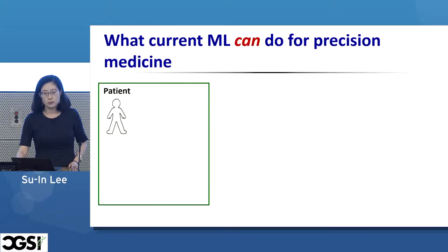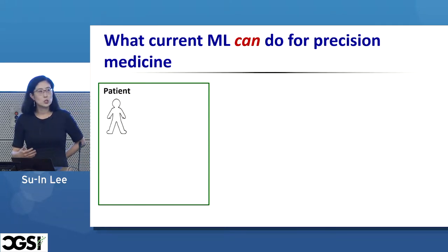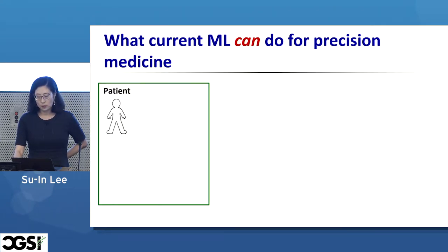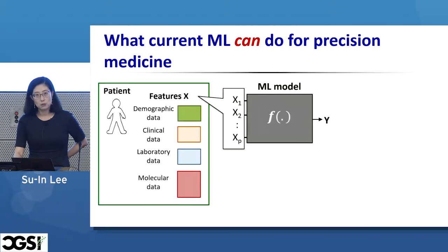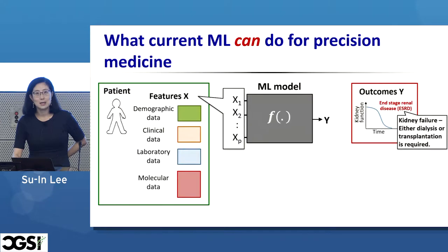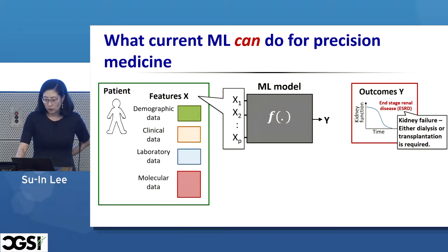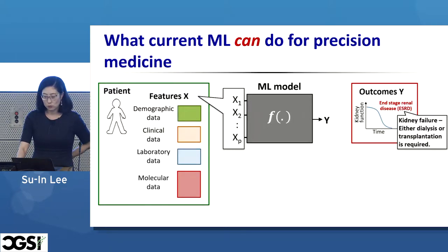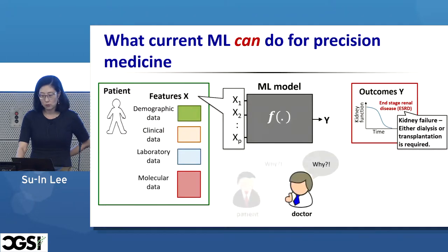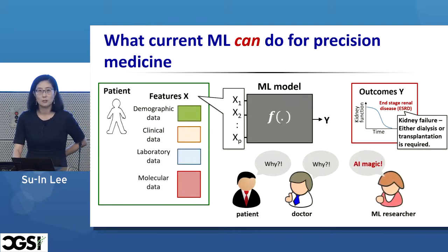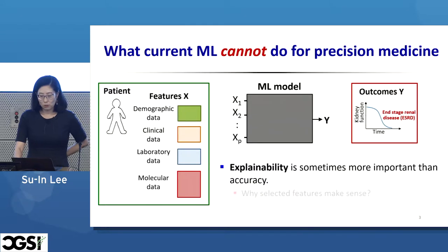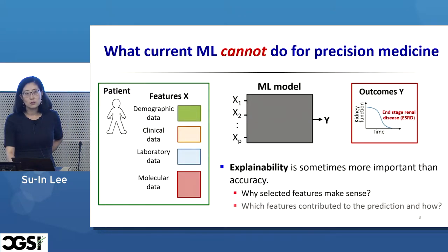These days in precision medicine, we try to solve a prediction problem. For each patient, we first obtain a set of features and use some machine learning model to predict some clinical outcome. Many of us know how to predict outcomes accurately, but what this way of using machine learning cannot do is answer a natural important question about why a certain prediction was made — even the ML expert who developed the system may say it's just AI magic. An important missing piece here is the explanations.